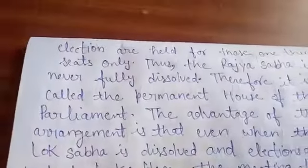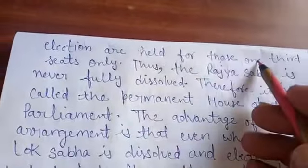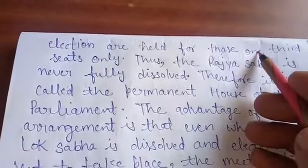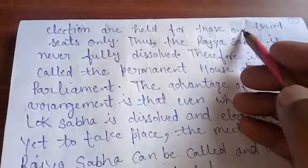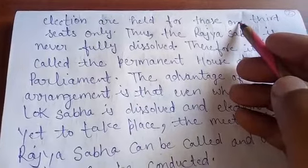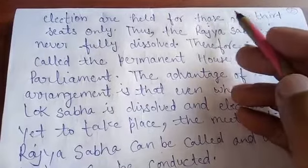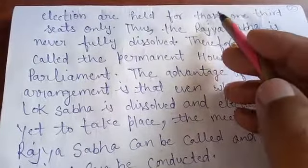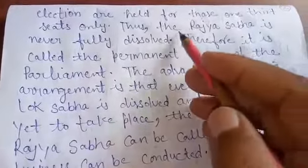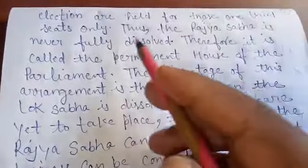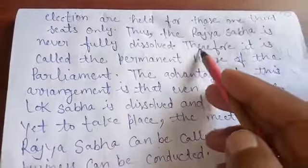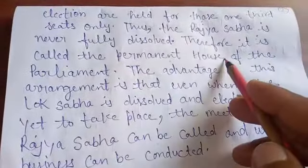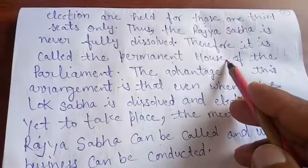Elections are held only for those one-third seats where members have completed their terms. Elections take place only for these seats. Thus, the Rajya Sabha is never fully dissolved. Therefore, it is called the permanent house of the parliament.